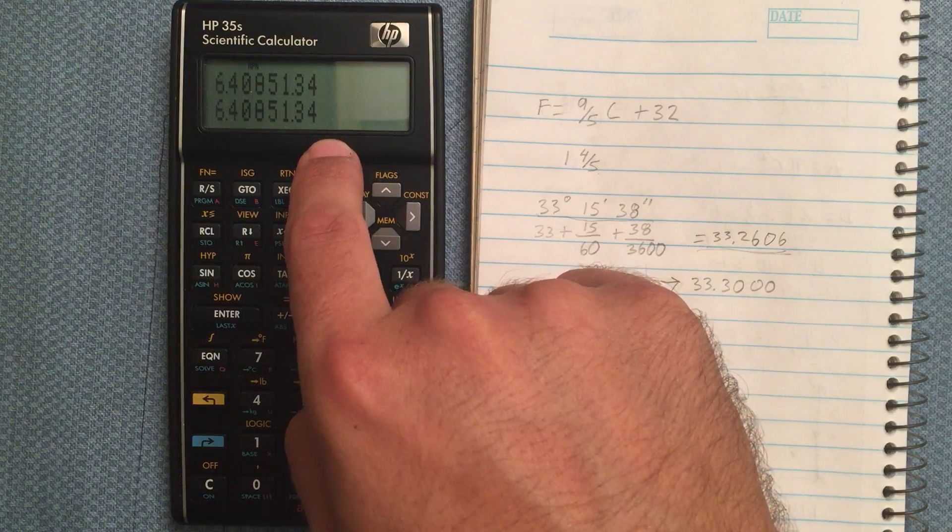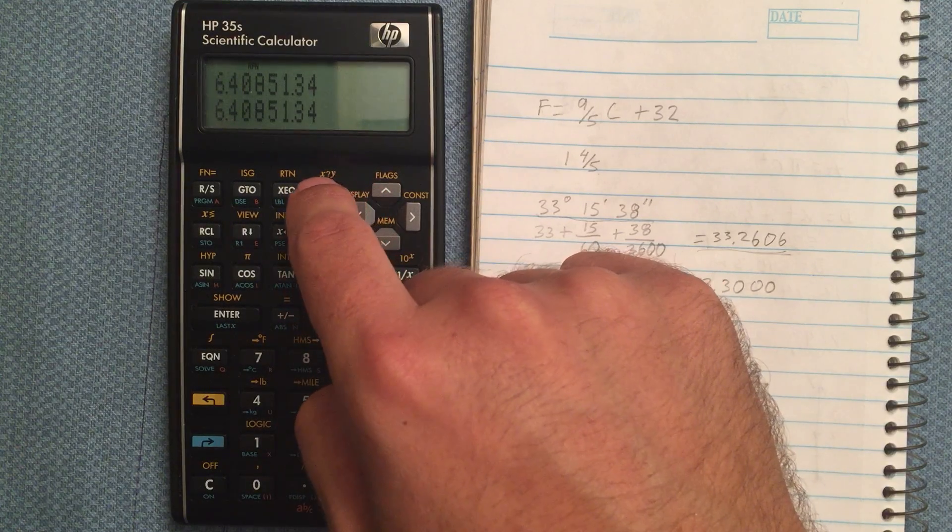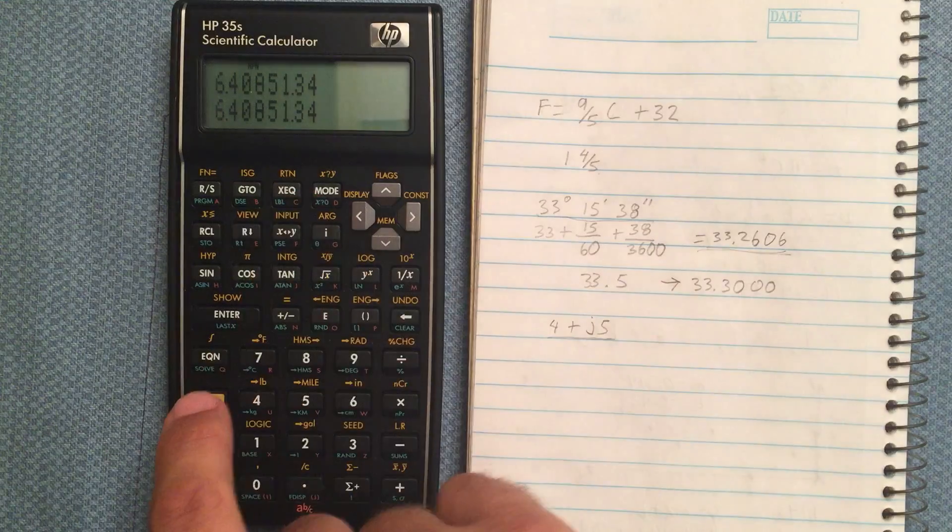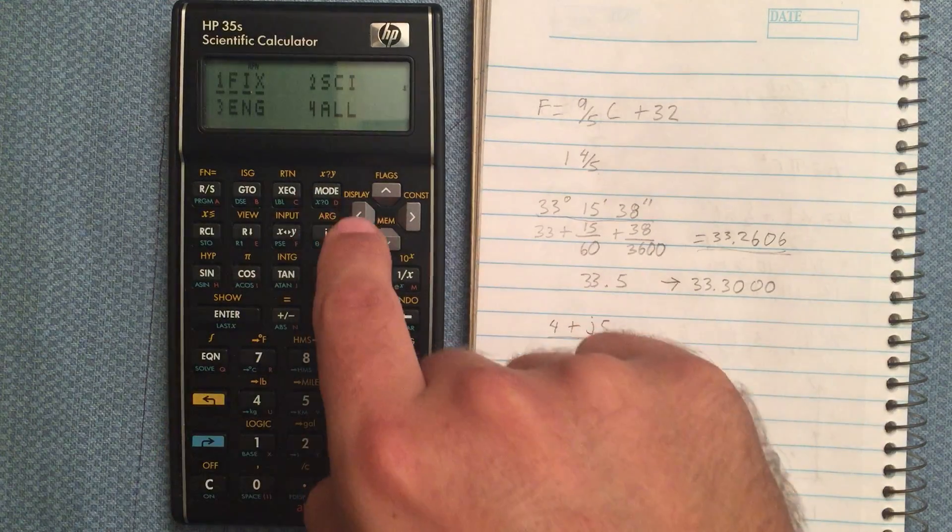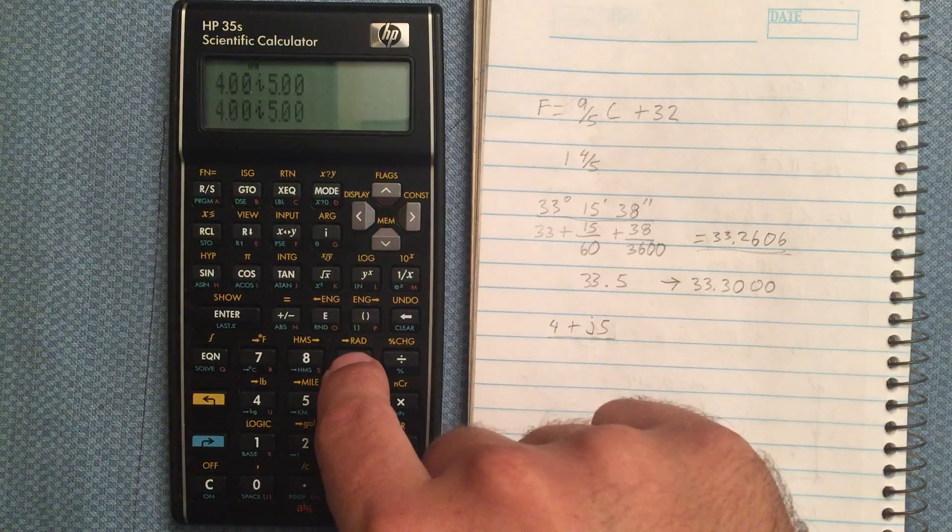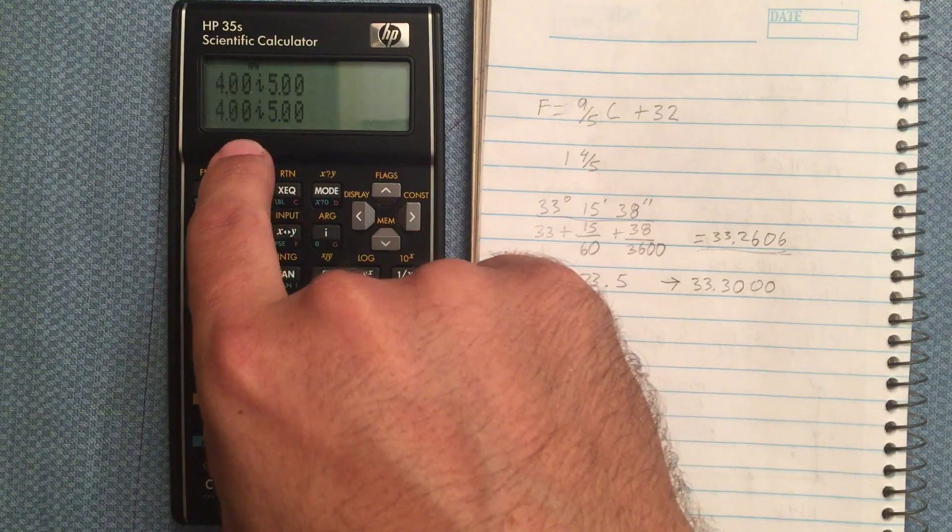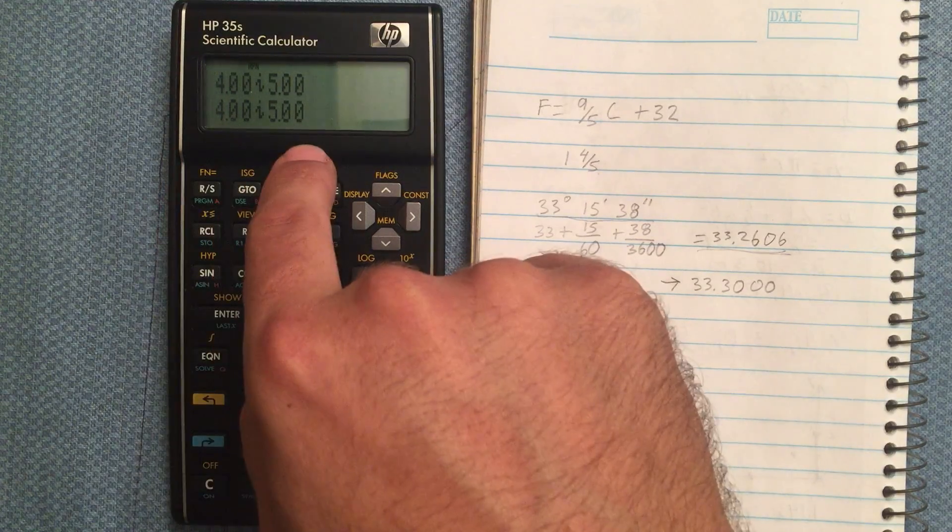Now one thing to note here, is it does matter what mode you are in, whether it's degrees or radians. So let's go back, 9 was rectangular, so hit 9. So we're in rectangular form.